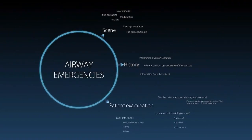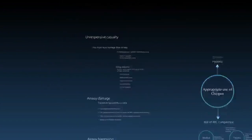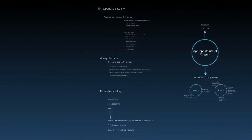This is the approach to airway emergencies. We'll now look at some of the different airway emergencies and how we manage these, including dealing with unresponsive casualties, dealing with obvious airway damage, and dealing with airway narrowing.